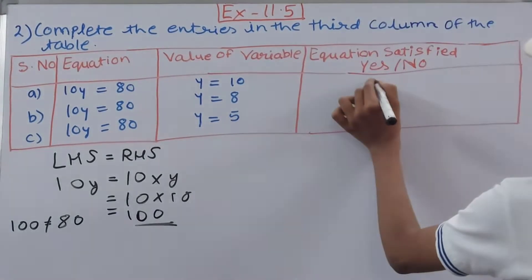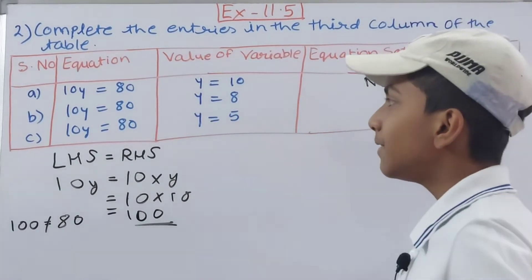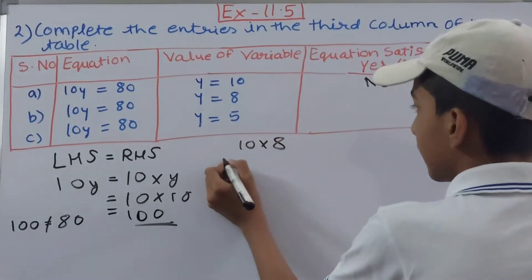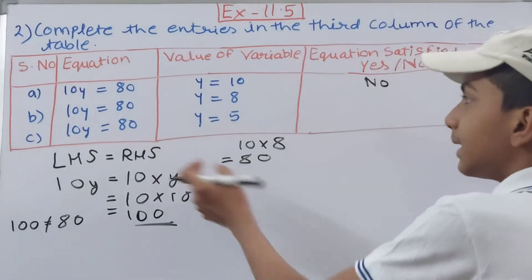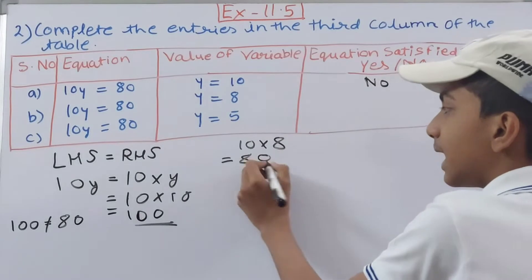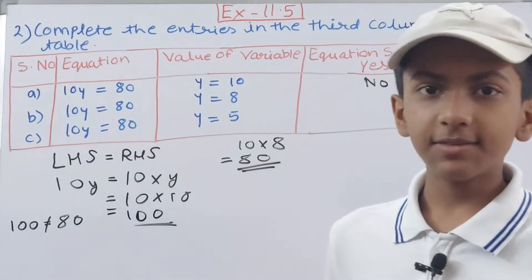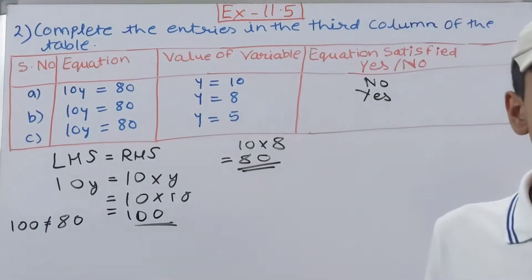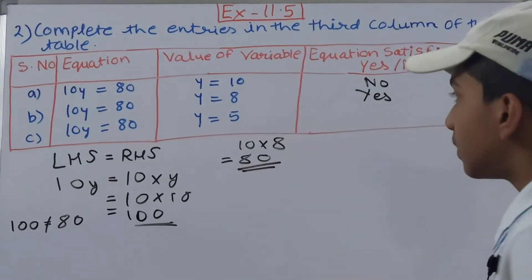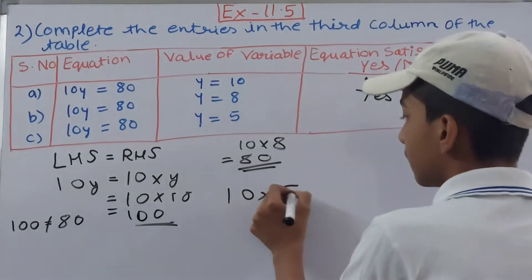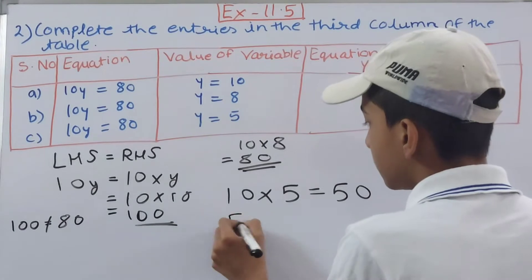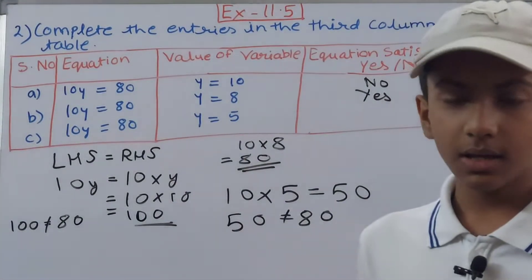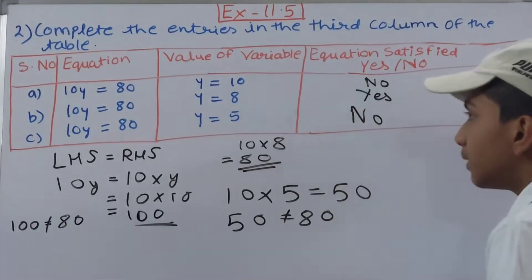Same equation 10y = 80, now y = 8. Do 10 × 8 = 80. The LHS is 80 and the RHS is also 80, so both sides are equal — equation is satisfied, write Yes. Then y = 5: 10 × 5 = 50, and RHS is 80. Since 50 ≠ 80, the equation is not satisfied — write No.